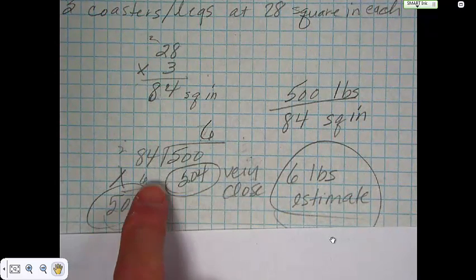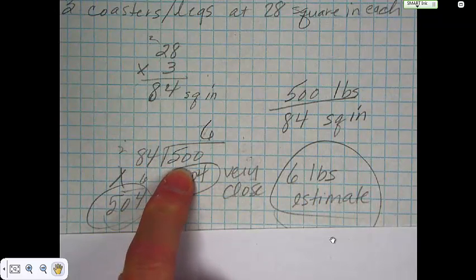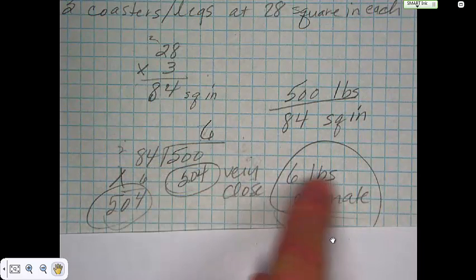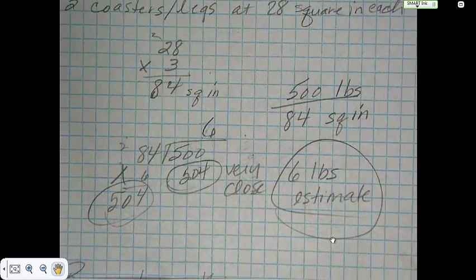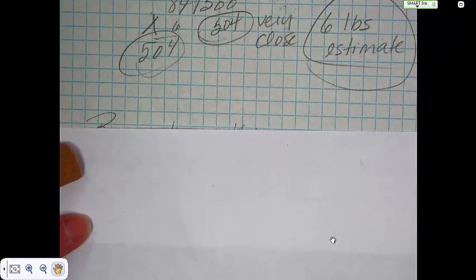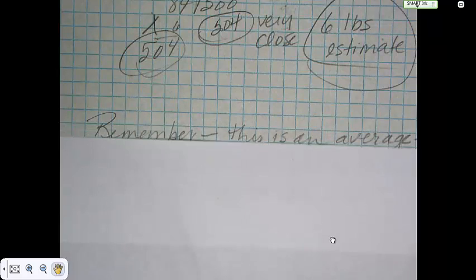Now notice 6 times 84 is 504, and we were trying to get 500. But 504 is very close to 500, so we're going to go with approximately 6 pounds per square inch. That 500 pound piano is going to be... That's a lot of pounds per square inch, actually, if you think about it. That means that in like 6 square inches, there's 36 pounds. That's a lot.